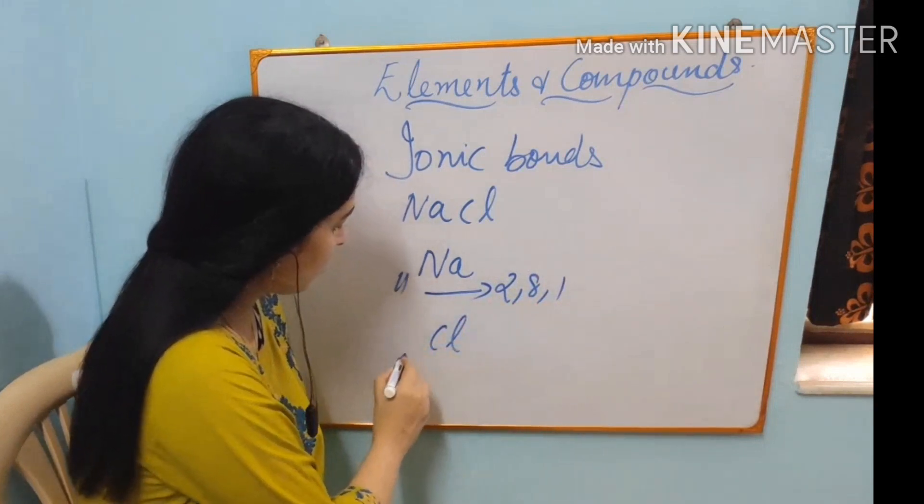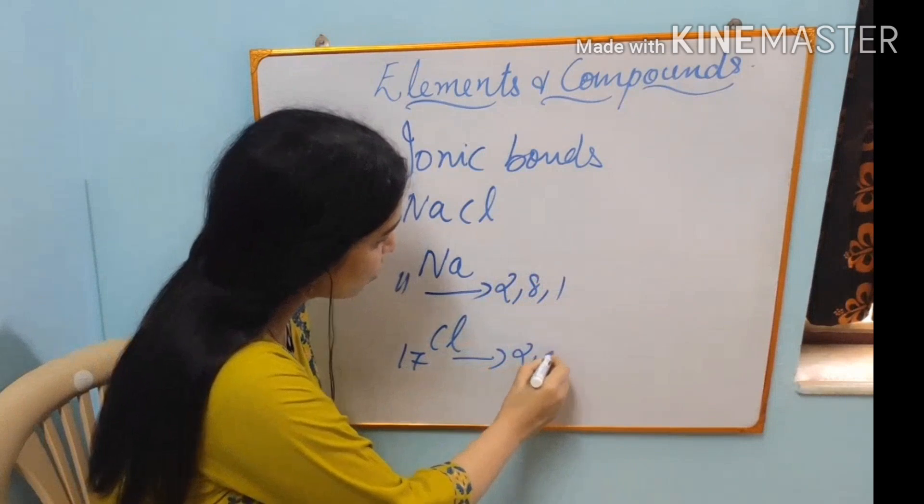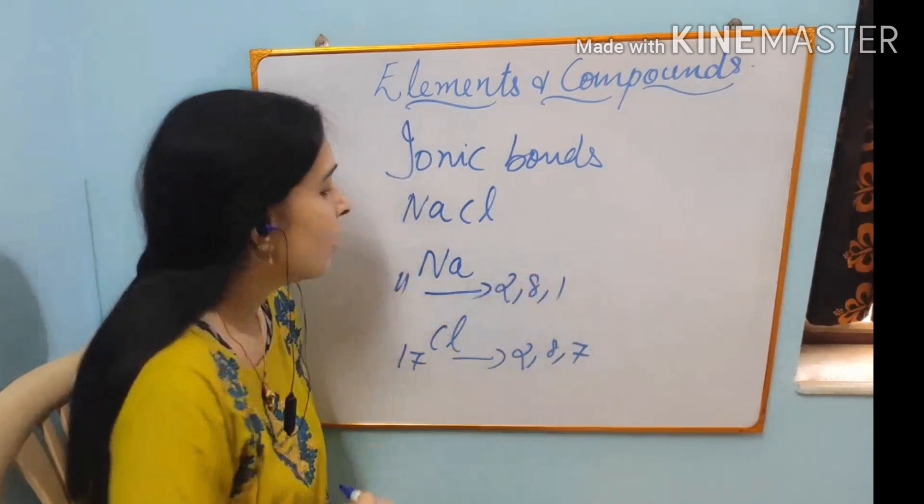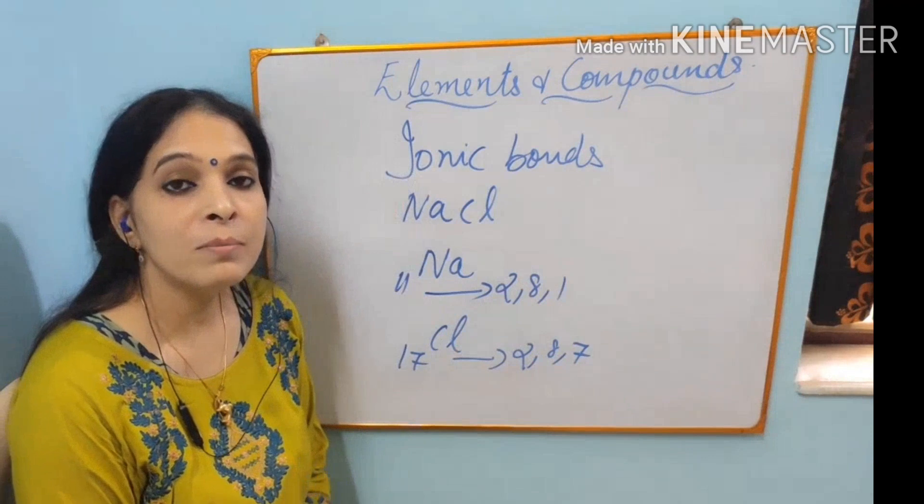Atomic number 11 and electronic configuration is 2,8,1. Chlorine, atomic number is 17 and electronic configuration is 2,8,7. By reacting with each other, how they become stable.